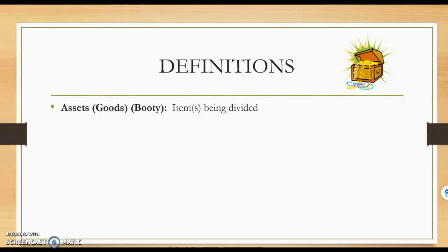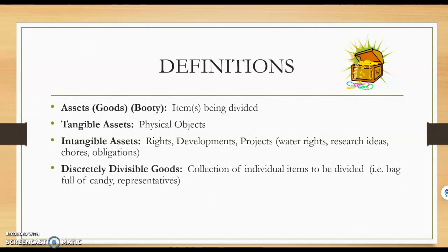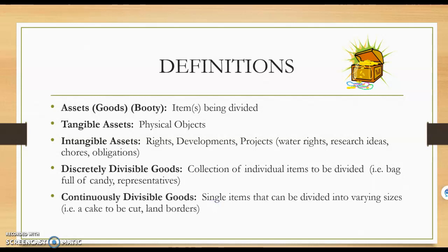The first definition is assets, which can also be called goods or booty — that's simply the item or items being divided. We have tangible assets, which are physical objects like candy, pizza, or cake. We also have intangible assets like rights or developments. We have discretely divisible goods, which are goods that cannot be separated into pieces — something like a representative, which can't be cut in half and must go to one group or another. We also have continuously divisible goods, which are single items that can be divided, like cakes or land.